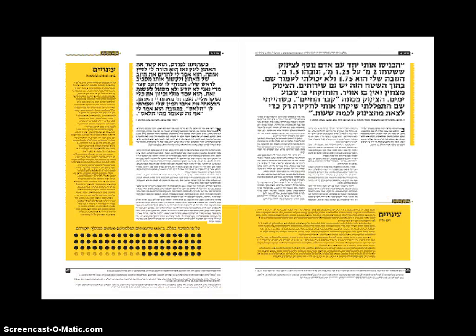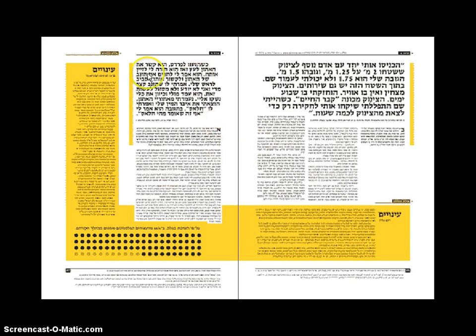It doesn't matter if your article is in English — there are certain elements that are always going to be used. You can see here we've got the same sort of three-column layout, with sometimes going to a two-column layout when you want that information to stand out as being different. Here's a single column layout with another small column, so they switch around the layouts in order to call our attention to the different areas.